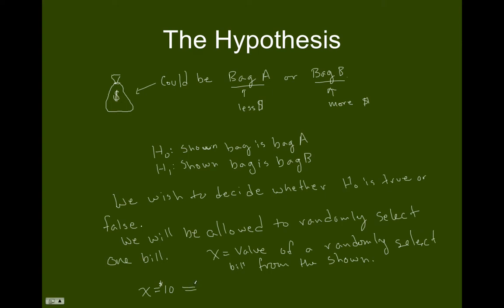What is this going to imply we should do? We might say this isn't a very large bill, so we should reject the null hypothesis. Now there's really a problem here in terms of the statistics, because basically what I've done is made a decision where I can't really assess in any meaningful way the likelihood that I made a mistake. When we make decisions in statistics, we have to acknowledge that decision could have been made in error. It's really important that we're able to assess the likelihood we've made a mistake.